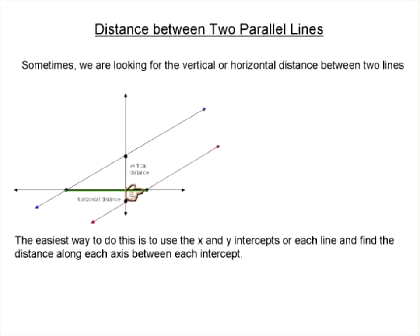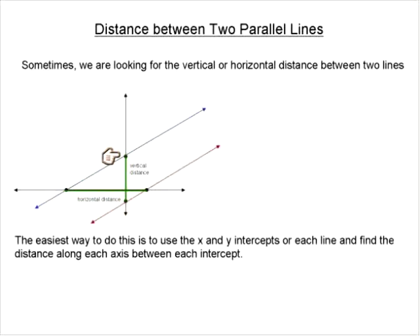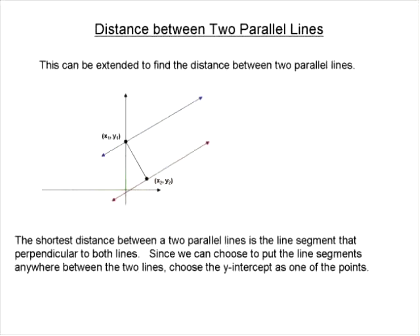If we know this x-value and we know this x-value, we just subtract the two. Same thing goes for y — if we know the y-intercepts, we can find the distance between the two, just taking this value and this value and finding that distance. That's a really easy way to find the vertical and horizontal distance between two parallel lines.